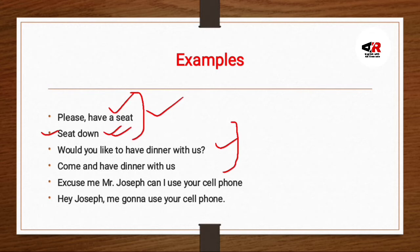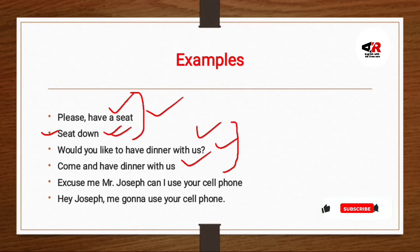'Would you like to have dinner with us?' — aur 'Come and have dinner with us.' Ab yeh jo pehla sentence hai yeh politeness ke daaire mein hai, aur doosra jo hai — 'Come and have dinner with us' — mein koi mithilab ethics niya, kooi proper sentence structure niya, direct keitha — so this is not politeness. Similarly, 'Excuse me, Mr. Joseph, can I use your cell phone?' versus 'Hey Joseph, I'm gonna use your cell phone.'